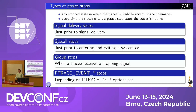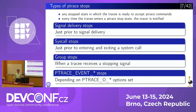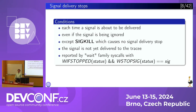Since tracing is essentially about processing ptrace stops, what are these ptrace stops? There are four kinds of ptrace stops, and they have slightly different semantics. For the tracer, it's important not to confuse them, because otherwise the tracing will go astray and would be pretty useless. The first type is signal stops, that occur just prior to signal delivery. Second are syscall stops, that happen just prior to entering and exiting system calls. Third are group stops, that happen when the tracee receives a stopping signal. And fourth are various kinds of ptrace events.